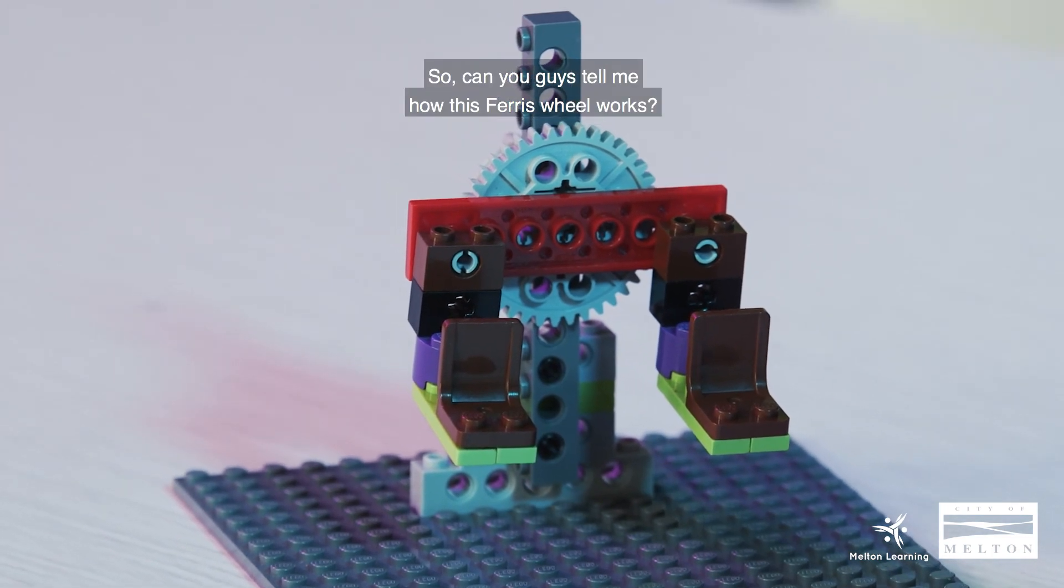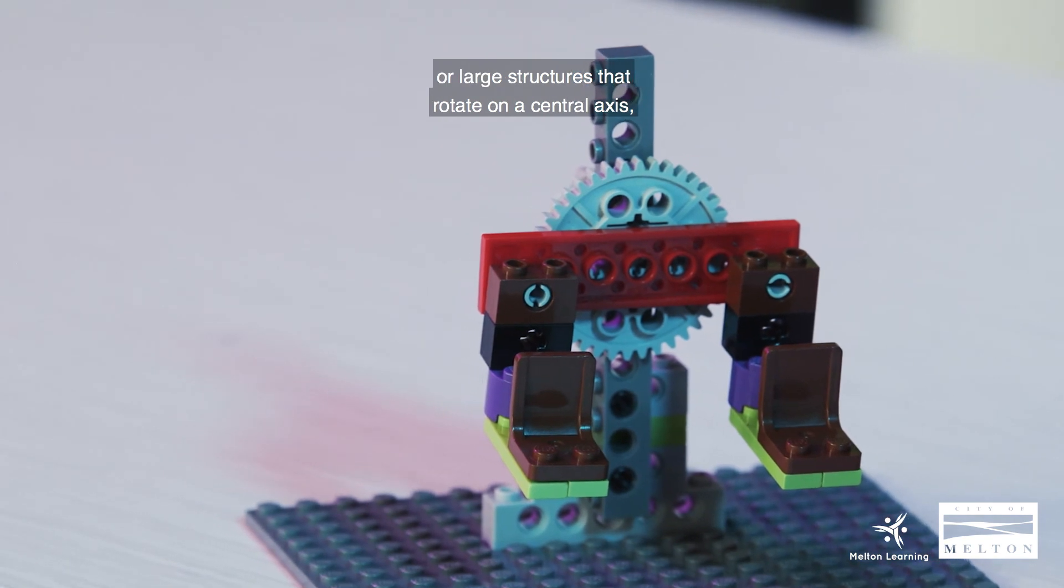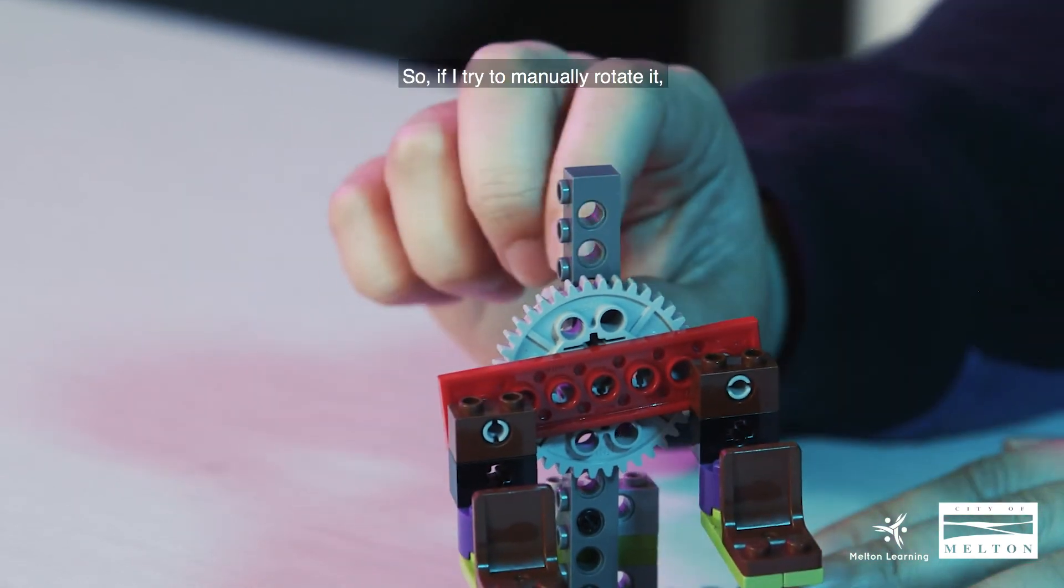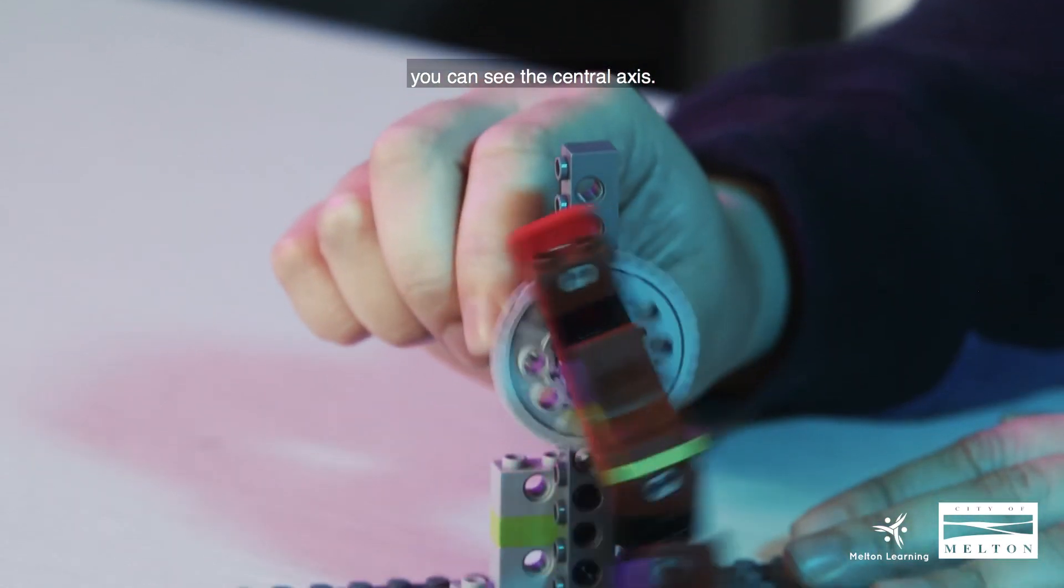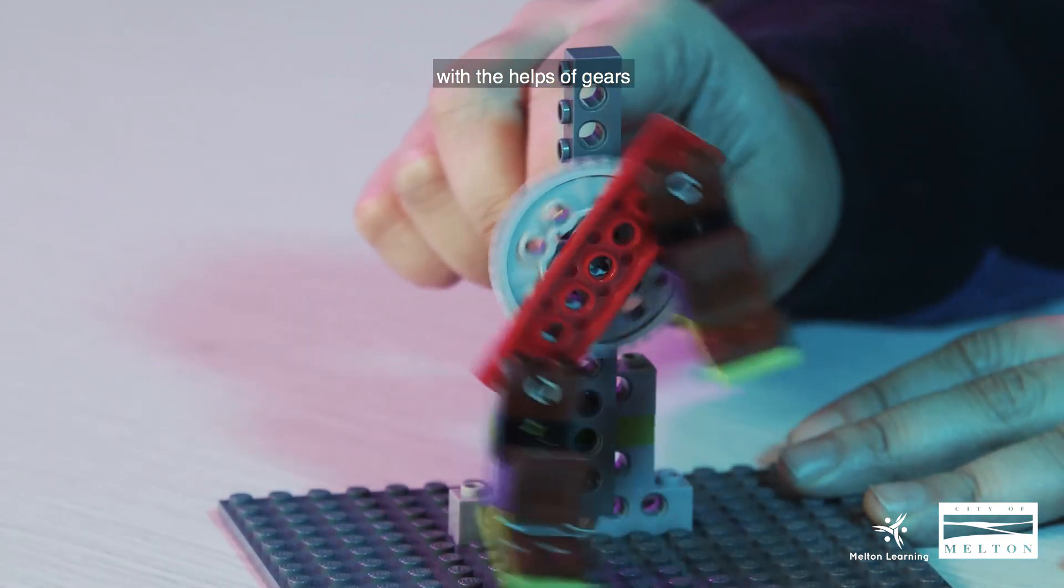So can you guys tell me how this Ferris wheel works? The basic idea is that Ferris wheels are large structures that rotate on the central axis. So because we have a tiny build, this is our central axis. So if I try to manually rotate it, you can see the central axis.